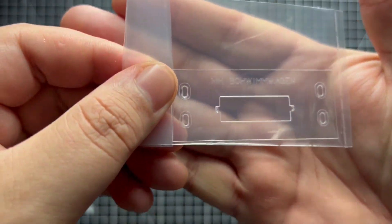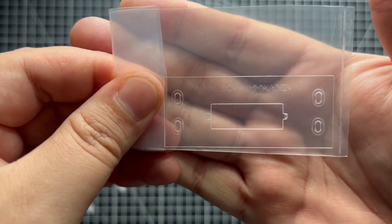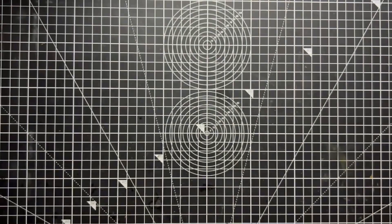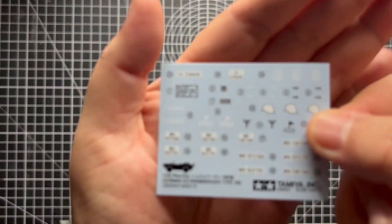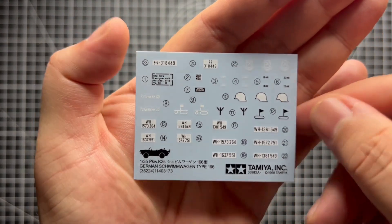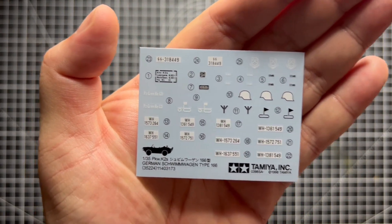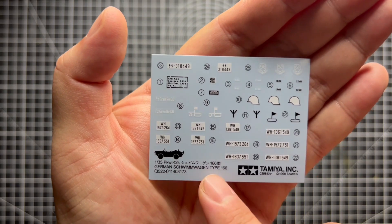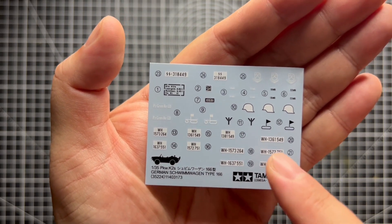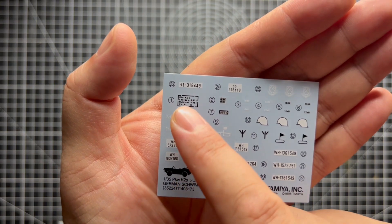Here we have the perspex for the windscreen and the headlights. Not much detail here but again nice and clean and crisp. Finally we have the decals. We have a few different variants for different vehicles, warning labels, the Tamiya logo, their address, the kit number, and different labels and paintings and designs that would be on the vehicle itself.